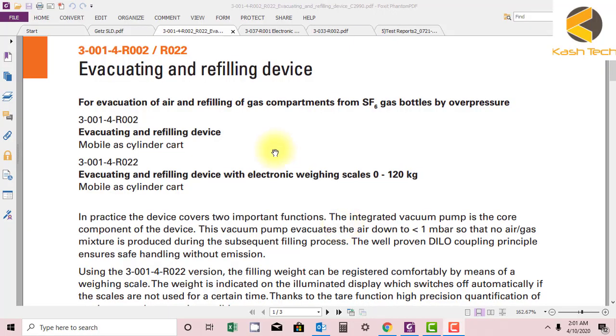Hey guys, welcome again. Now we'll move to our new topic: the devices we are using for maintenance of GIS. The device we will start with is the evacuating and refilling device. In the GIS, SF6 is filled.